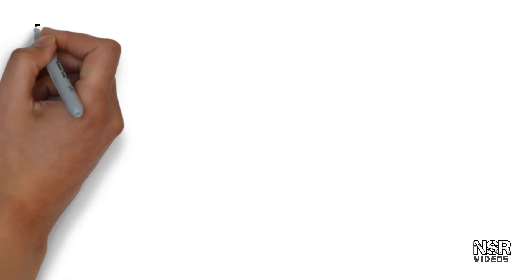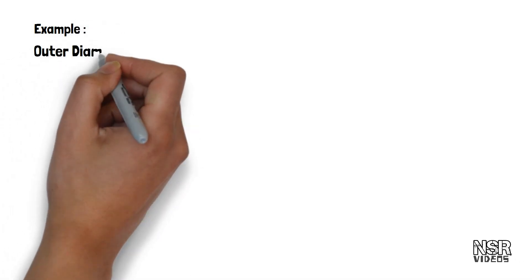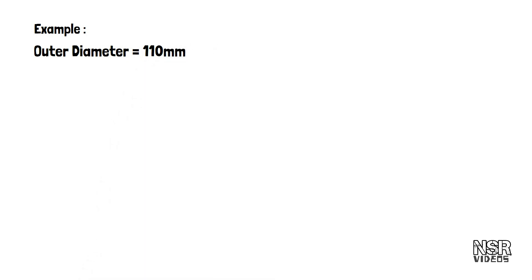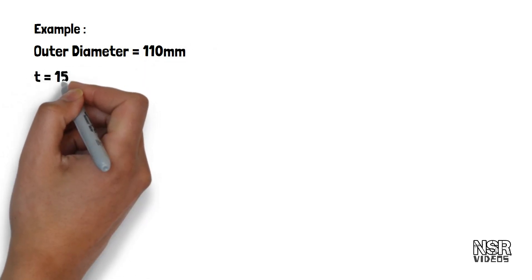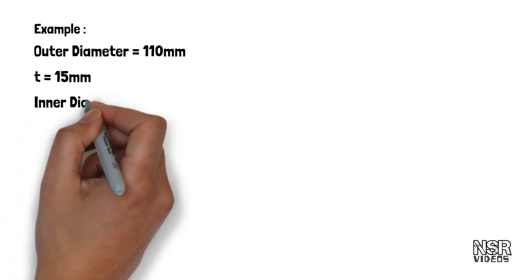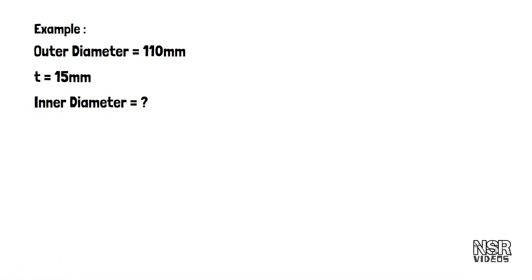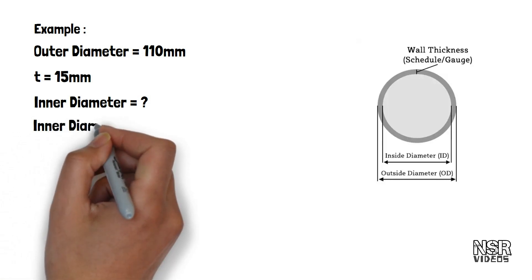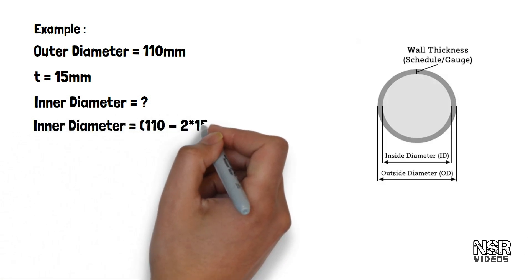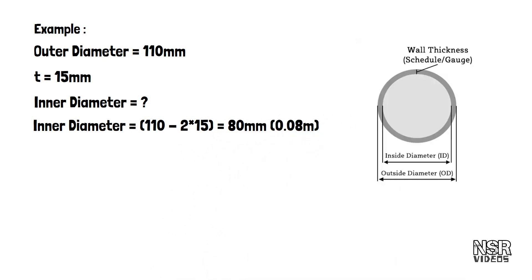We will show you the example. Outer diameter equals to 110 mm. Inner diameter equals to outer diameter minus 2 into 15 mm, which equals to 80 mm, or 0.08 meters.